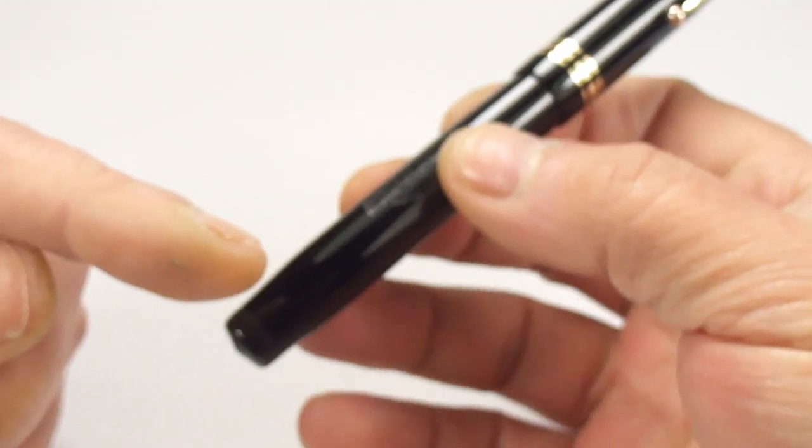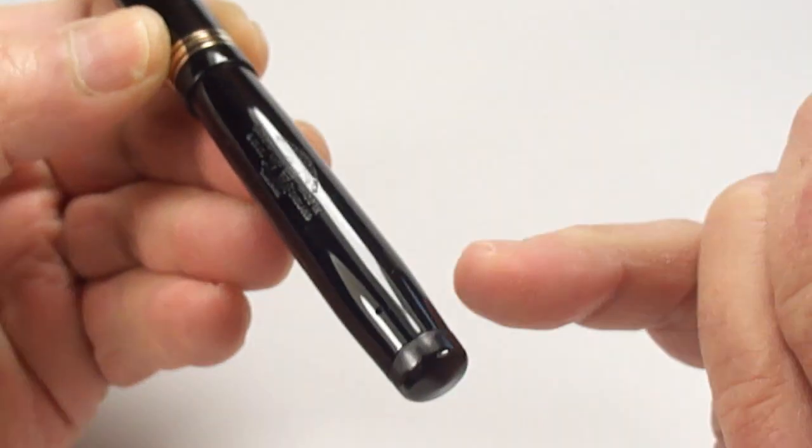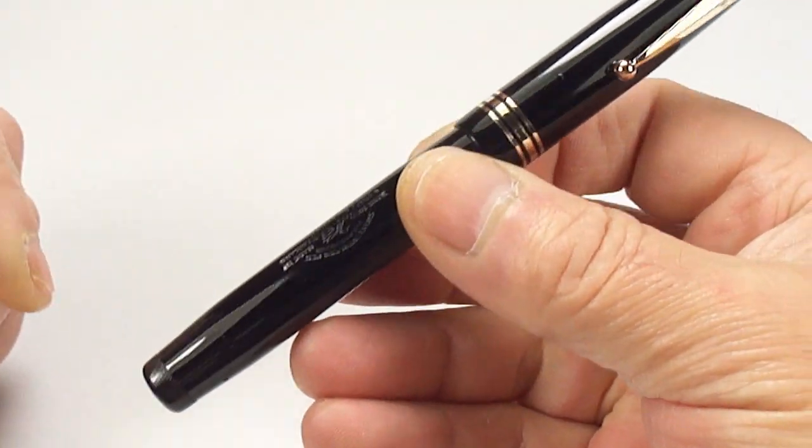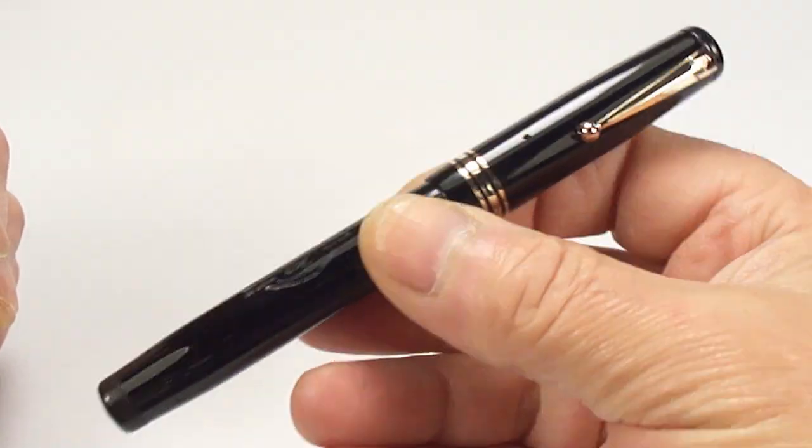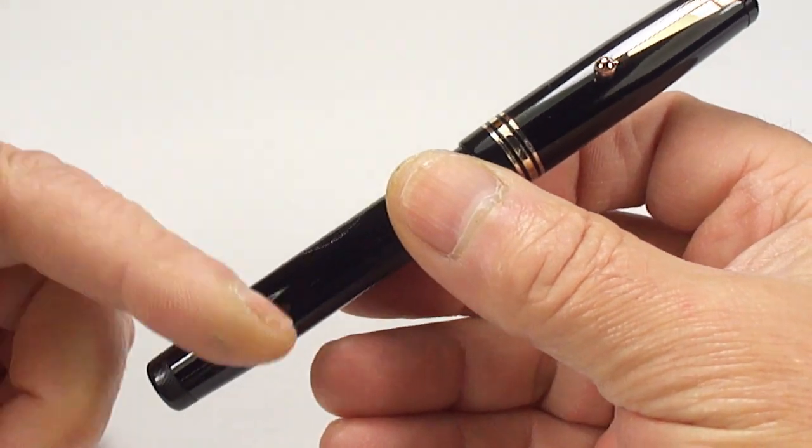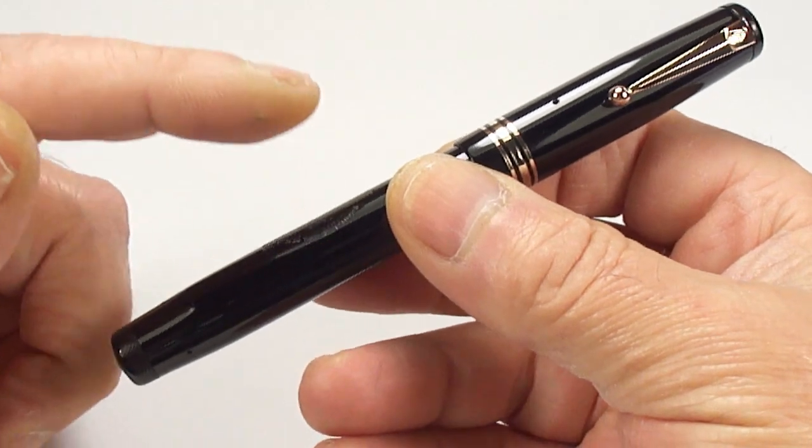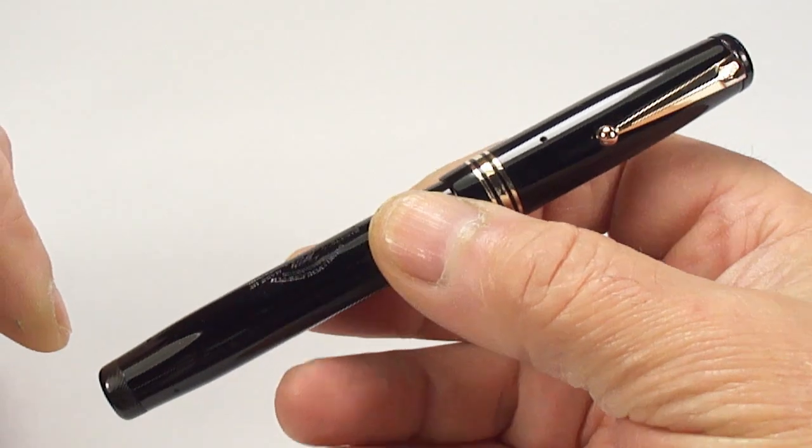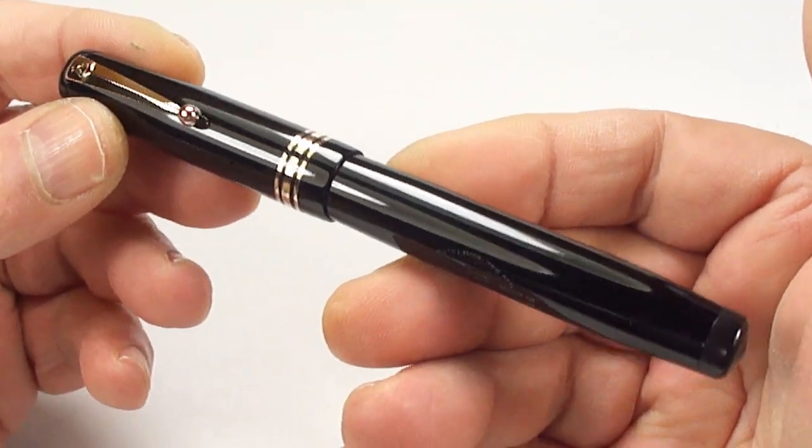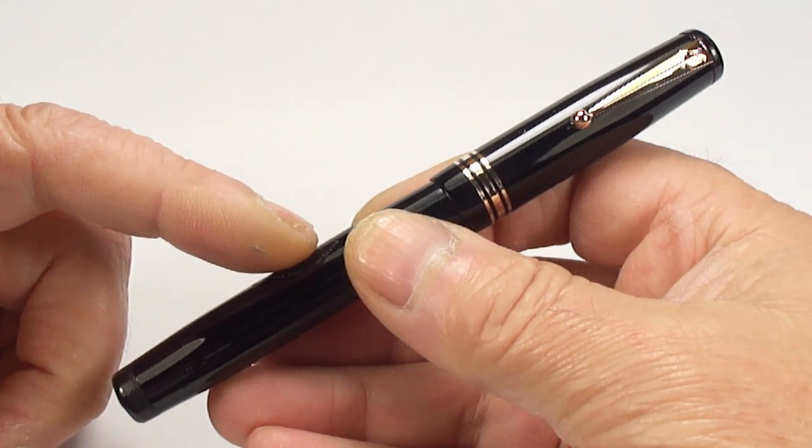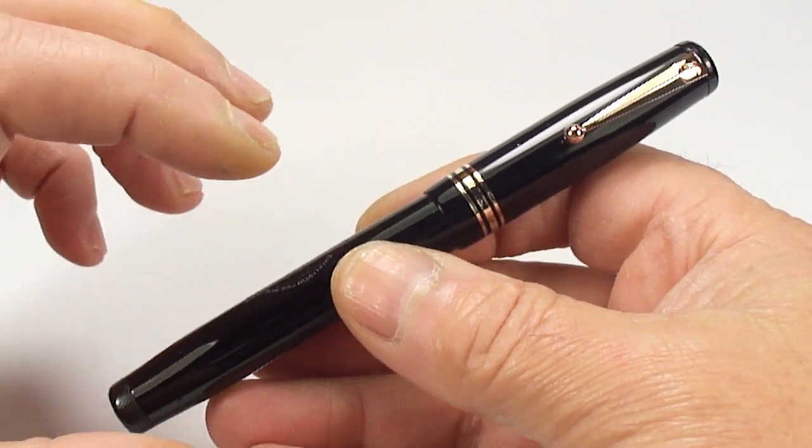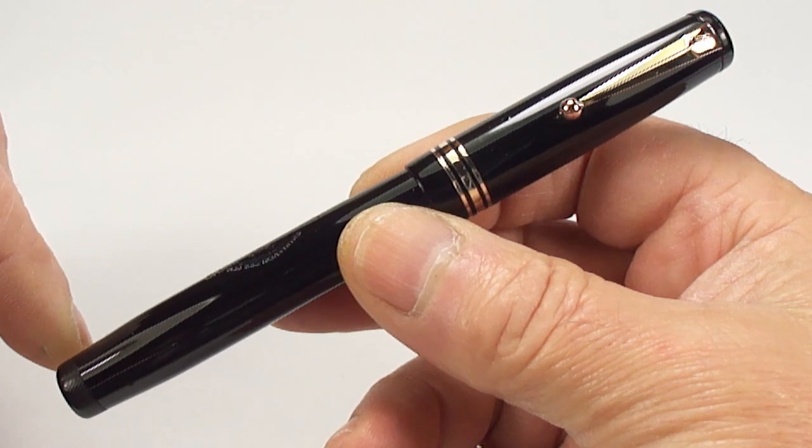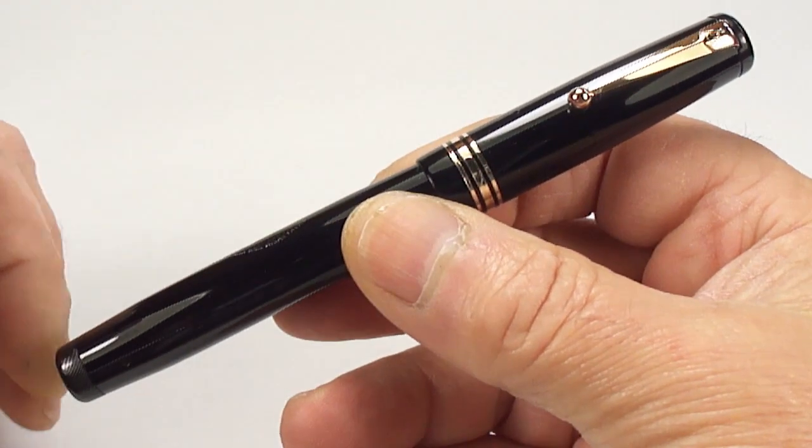Now the unusual thing about this pen is that normally on the bottom here you will have the model number imprinted to the barrel. Unfortunately, for some reason it doesn't have one. Now I believe this is the 2060 fountain pen, a large chunky pen, which means it was actually one of the top of the range pens within the Swan range of pens of the period.